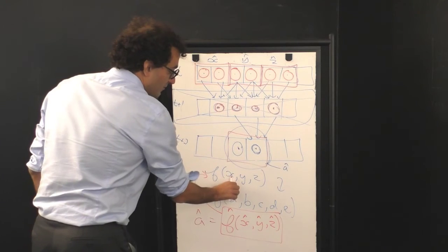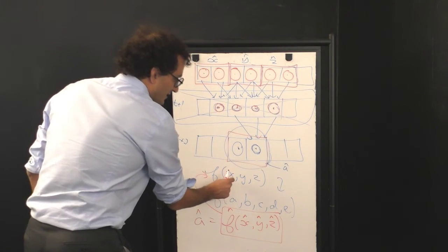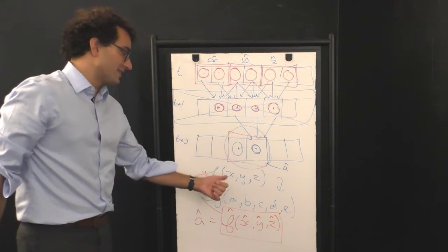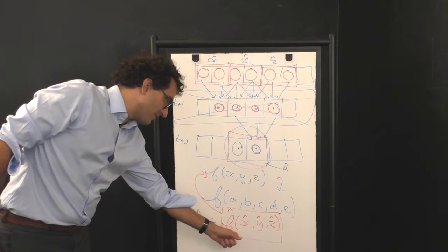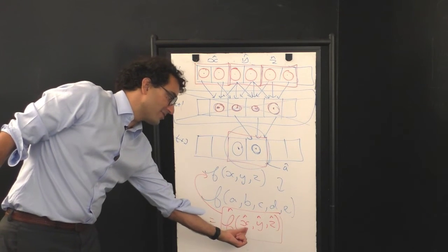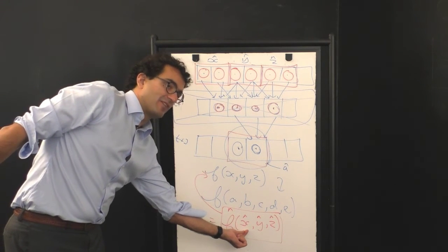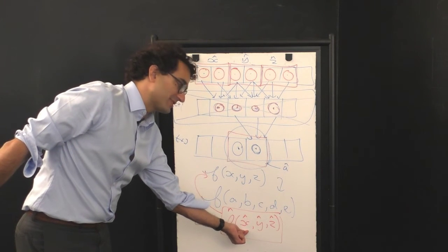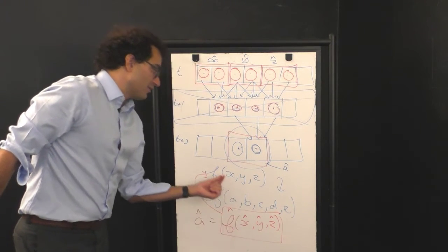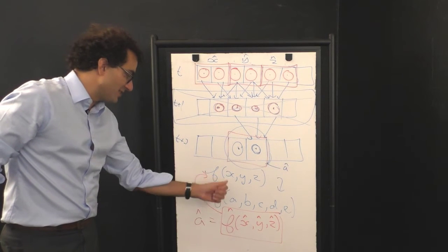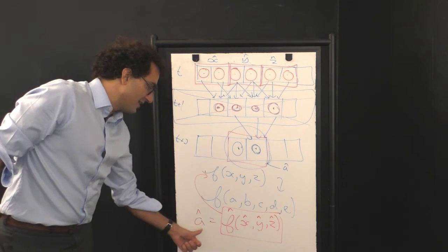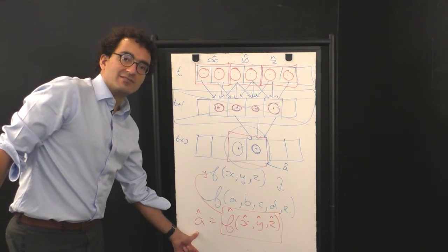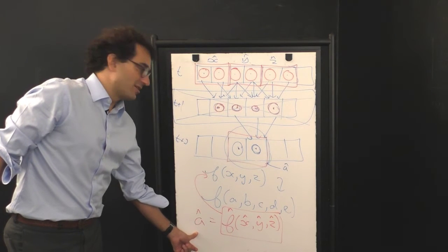The original evolution law for the cellular automata takes binary variables, ones and zeros. This evolution law here takes pairs of ones and zeros. Instead of there being two possible states for each supercell, there are four. And while this one here outputs a one or a zero, this function here outputs a zero zero, zero one, one zero or one one.